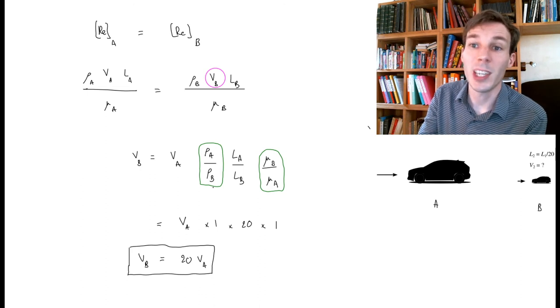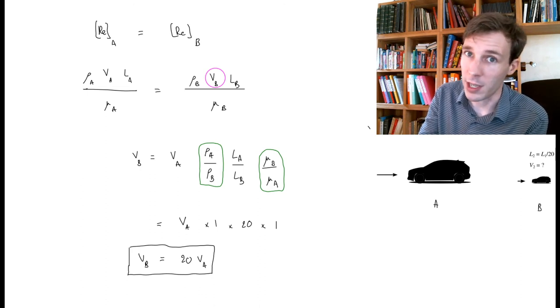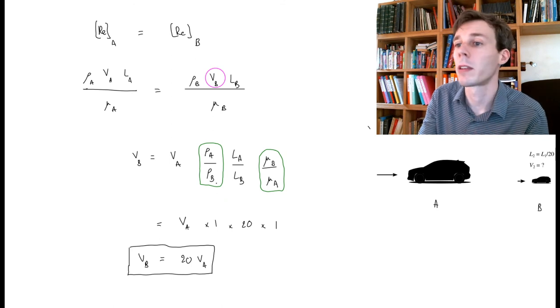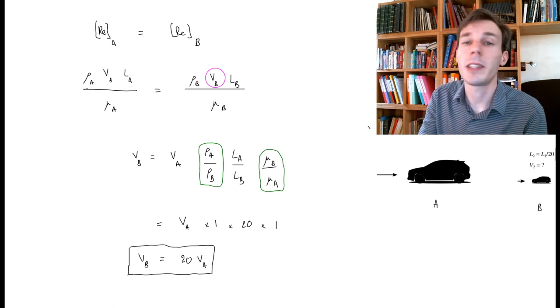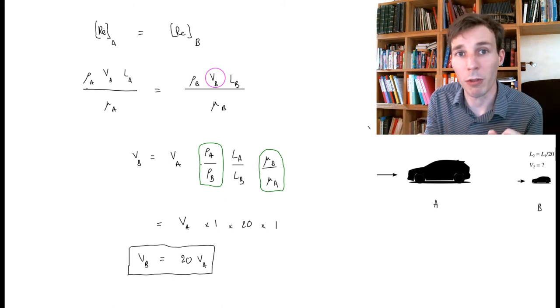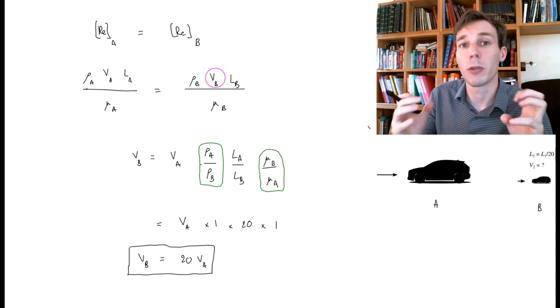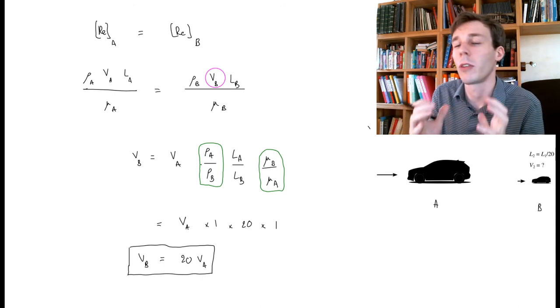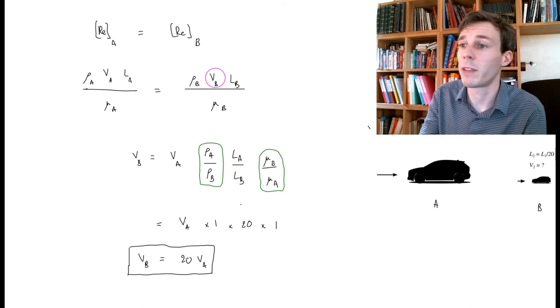In this case, you want this fraction to be smaller to basically compensate for the factor 20. And so if you increase the density B compared to density A, then you're going to get away with some of that. Increasing density B typically is done by cooling down the fluid. And so having very dense fluid, very dense air, cool air, will help you compensate for this.